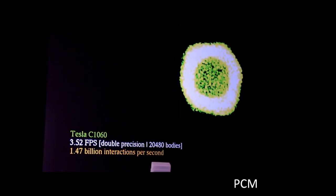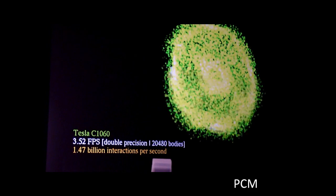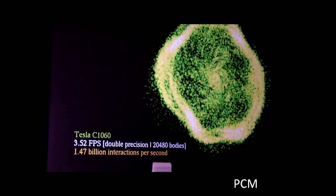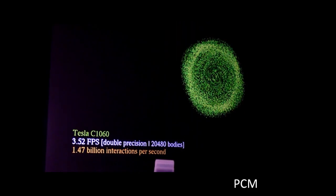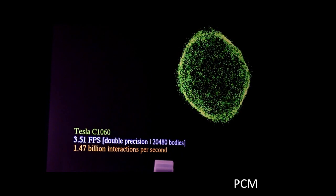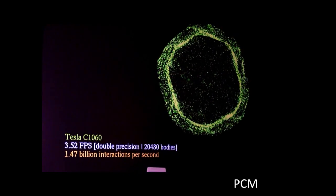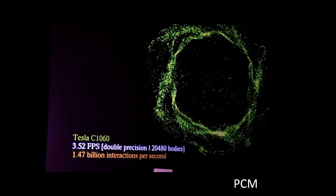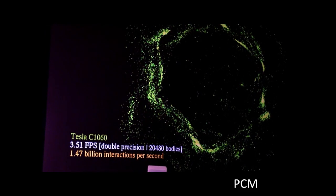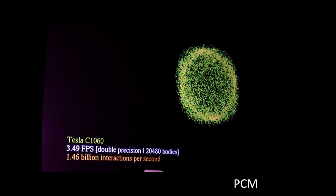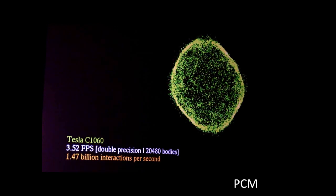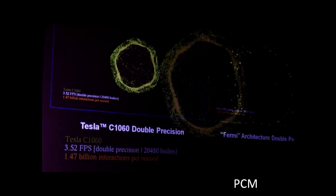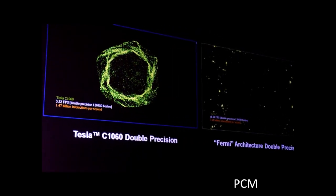So this is the 1060 running double precision. This is still a speed-up over a CPU. However, now that you've got the GPU computing bug, you just wish that we treat double precision as an equal citizen to single precision. So if you could, show me what this application looks like on the Fermi.